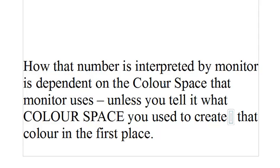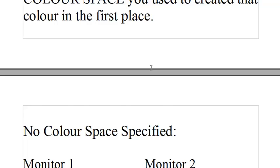Incidentally, this is the British spelling of colour with the U in it — I know it doesn't make any sense, but that's British spelling. So if we have no color space specified, monitor one would have given an RGB value equivalent to blue, but monitor two, when it receives that same RGB value, might see it as more of a blue-green. So the hue would have shifted and it will look different because you haven't told it any way of checking between the two.